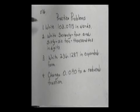Now I'd like for you to do some practice problems. Number 1, write 103.0715 in words. Number 2, write 74 and 66 ten-thousandths in digits. Number 3, write 236.1287 in expanded form. Number 4, change 0.040 to a reduced fraction. Copy these problems down. Once you get them copied, cut the tape off and work the problems. When you think you have them done correctly, cut the tape back on to check your answers.